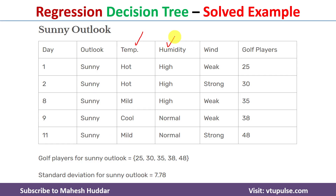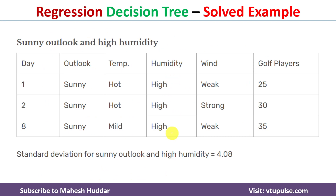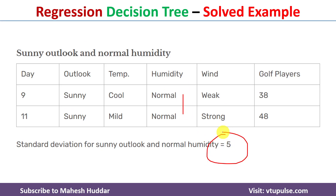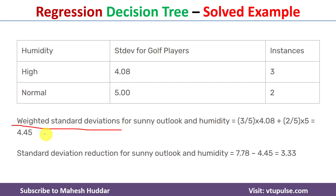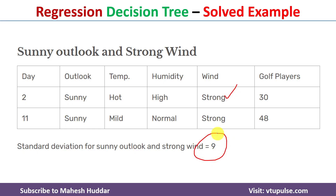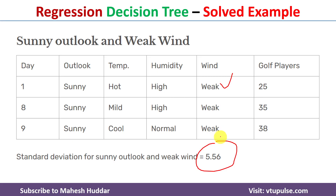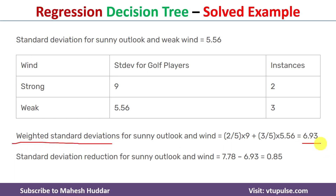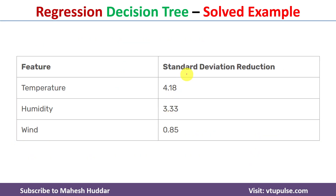For Humidity within the sunny subset: when high, SD = 4.08; when normal, SD = 5. The weighted SD is 4.45 and the SDR is 7.78 minus 4.45 = 3.33. For Wind within the sunny subset: when strong, SD = 9; when weak, SD = 5.56. The weighted SD is 6.93 and the SDR is 0.85.